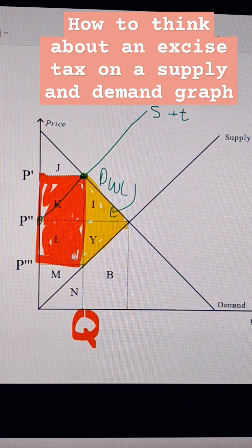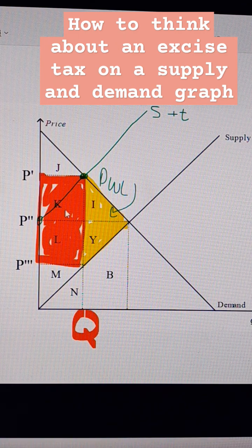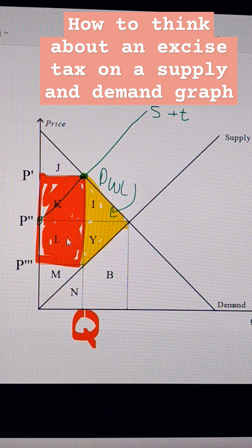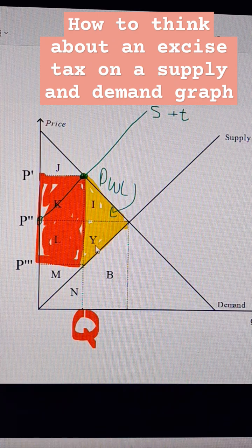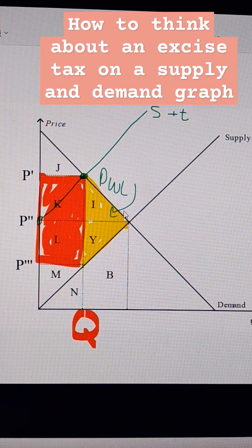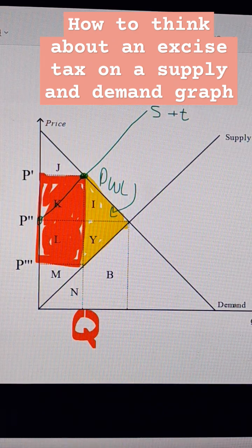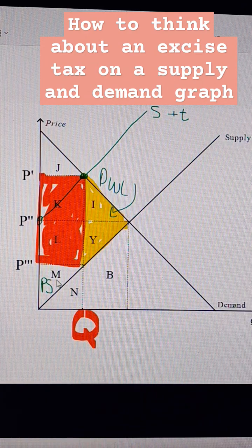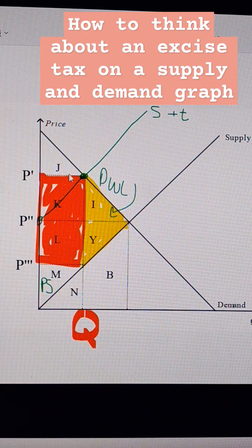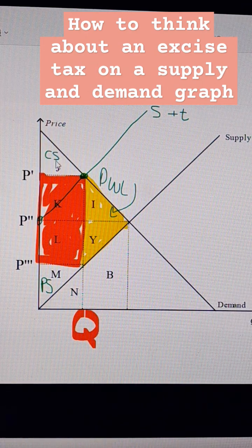So here's how to think about this. K and L would be the tax revenue, I and Y would be the deadweight loss. And then all the way down here, M would be producer surplus, and J would be consumer surplus.